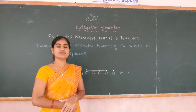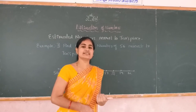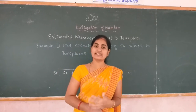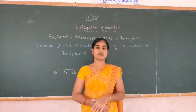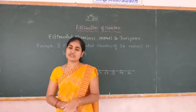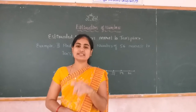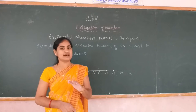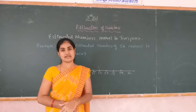Estimation of numbers means you write the nearest tens, or nearest hundreds, or nearest thousands number to the given number. That is called the estimation of numbers.